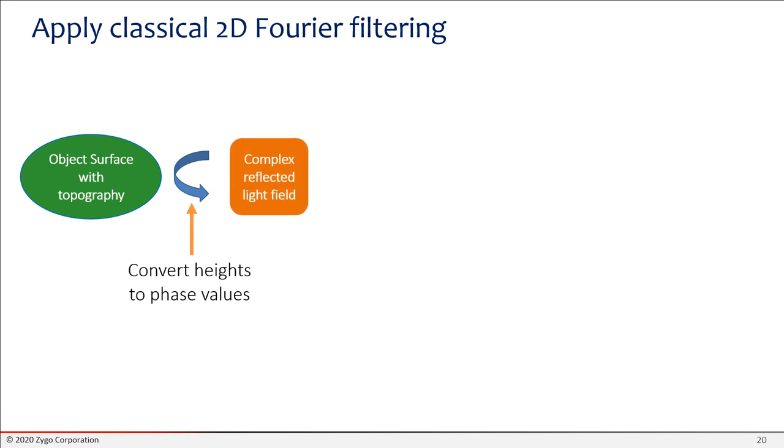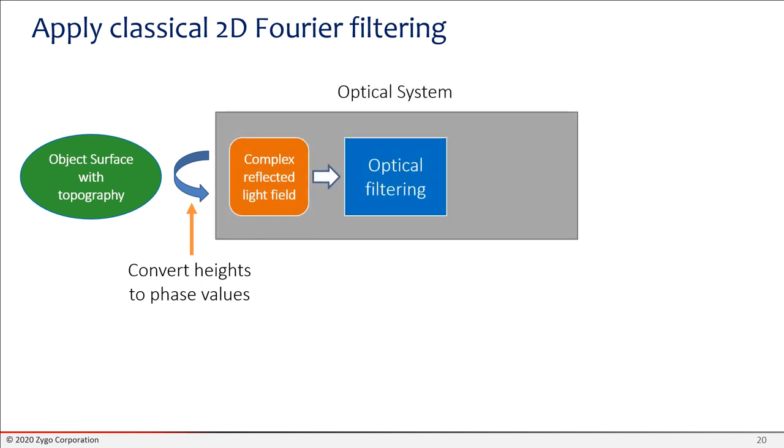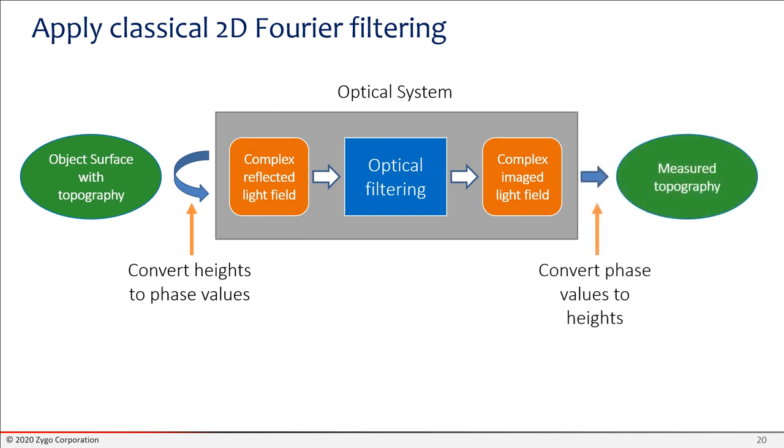Now of course in an optical system we usually use lenses and mirrors and so forth to create the far field without going off to infinity, but that's the basic idea. The next step is where our Fourier optics comes in. We're going to take our part, shine light on it, and that will give us a complex reflected field. And then we're going to feed that into an optical system. And that optical system is going to apply some optical filtering that might attenuate or even distort the signal somewhat. Once that's done, we're going to look at the complex image light field that comes out the other side. To get the surface topography, we have to interpret the phase values of that complex image light field, and that gives us the measured topography. So a lot of what's important in this model is how the optical filtering takes place.